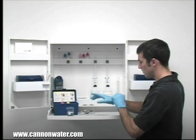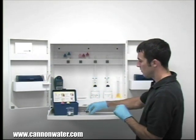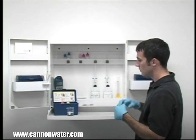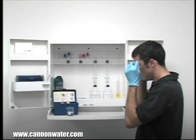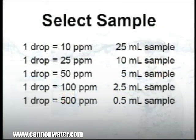The first step according to the endpoint ID procedure is to select the appropriate sample size. You want to select a sample size that matches the equivalency you would like to use. In this example, we are going to use a 25 ml sample. Therefore, our equivalency is one drop equals 10 parts per million as chloride.